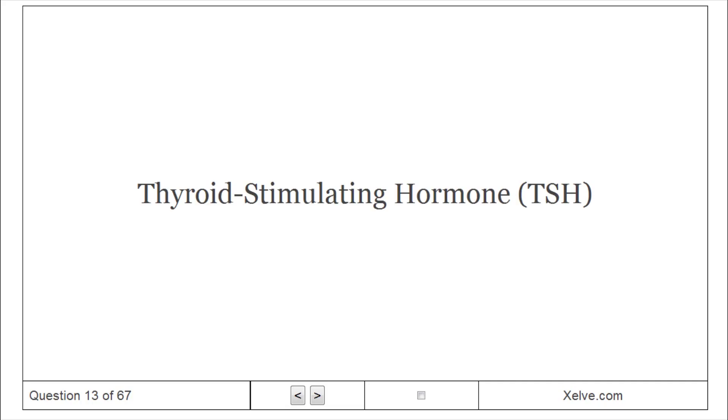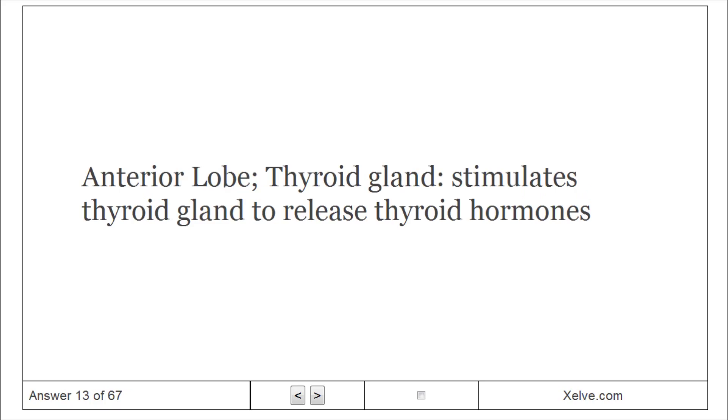Thyroid stimulating hormone, TSH. Anterior lobe targets thyroid gland. Stimulates thyroid gland to release thyroid hormones.